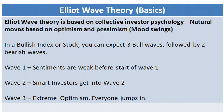In a typical bullish index or stock, the expectation is that we'll have three phases of bullish runs or bullish waves, followed by two step-downs or two waves of bearish waves. After that, it's expected to enter into a new Elliott Wave.